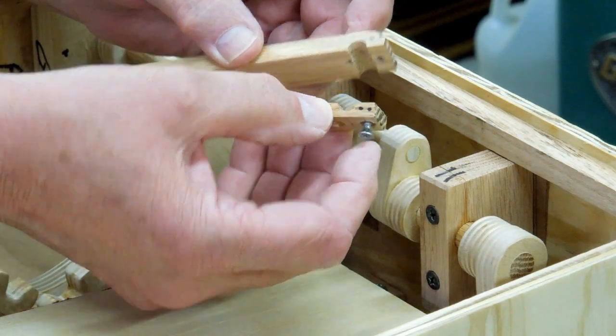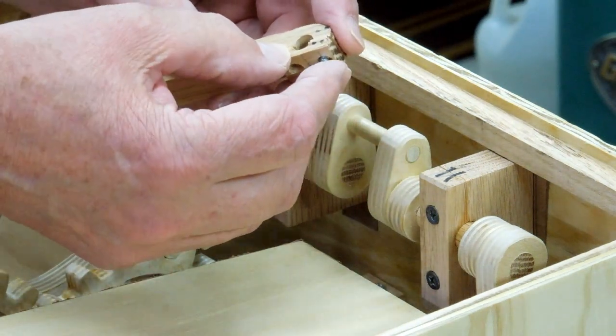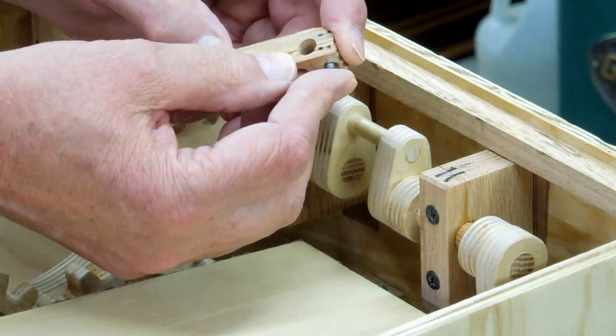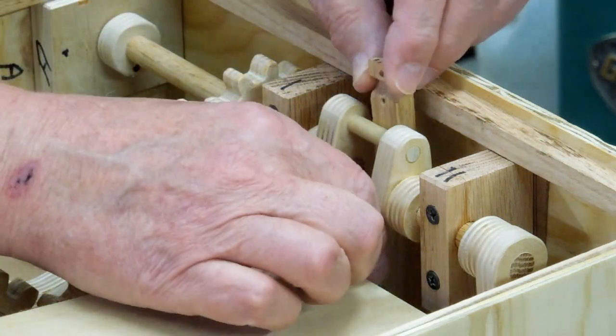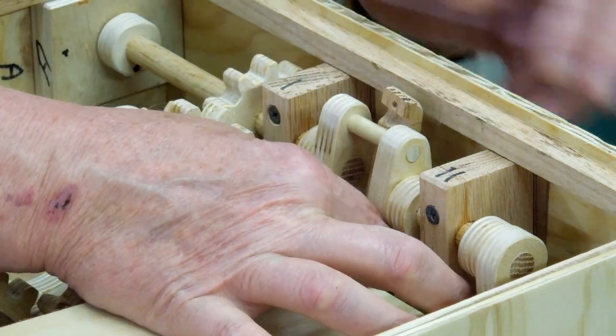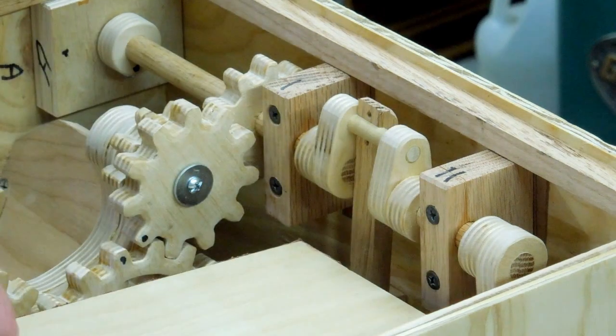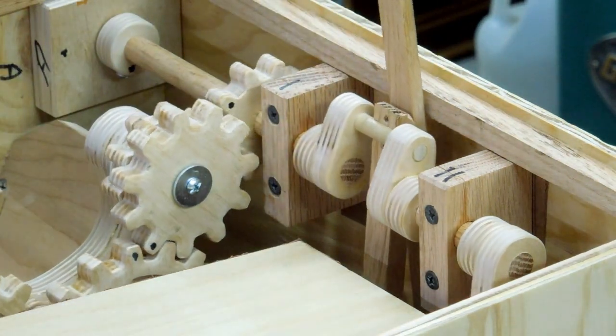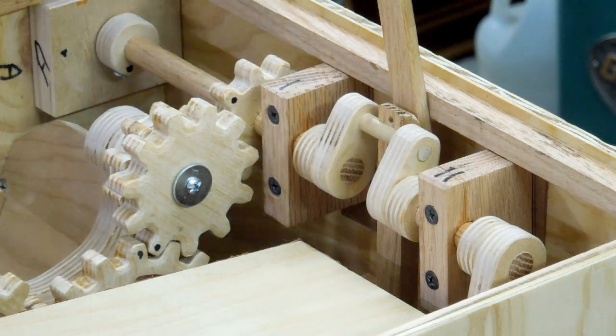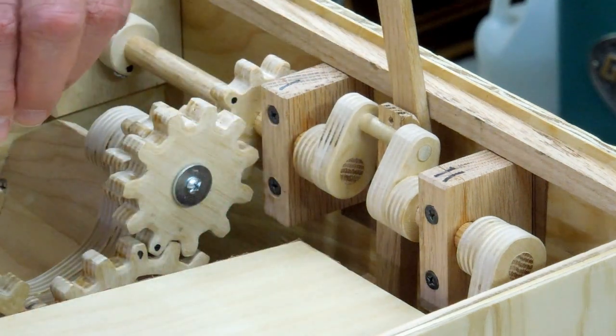I made these two pieces to go around the crankshaft. Screwed them together and then drilled the 5-16ths hole. Put this down in here. Put a piece of wood behind it to hold it. Give me a chance to start these screws.